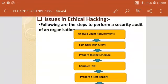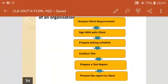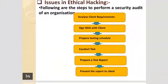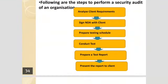Fourth, perform the test only on the agreed limit. Now there are six steps available to perform a security audit of an organization. The first step is to analyze the client requirement — interact with the client organization and analyze what they want from the test.